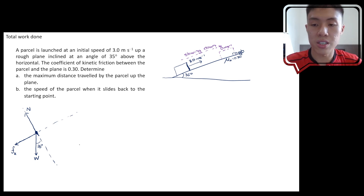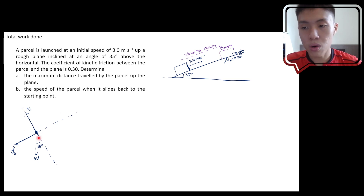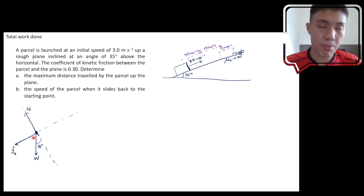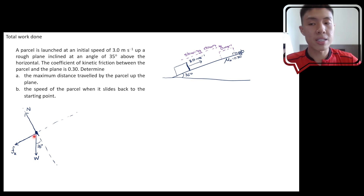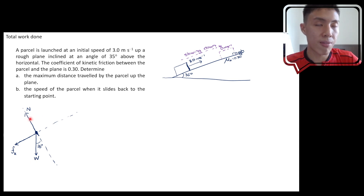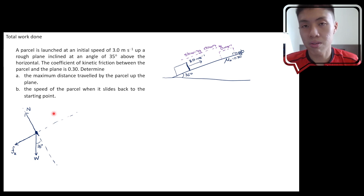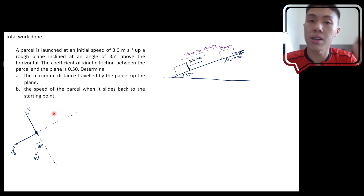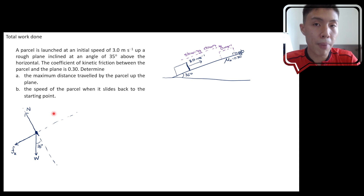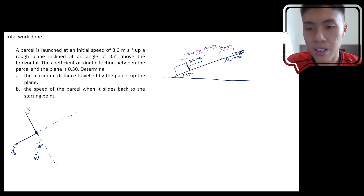To determine the total work done, there are two approaches. One is to find the work done by each of the three forces and add them up. The other is to find the net force first, then use it to find the work done by the net force, which equals the total work done. I'll use the second method — finding the x and y components of the net force, then combining them.